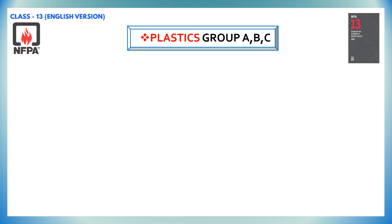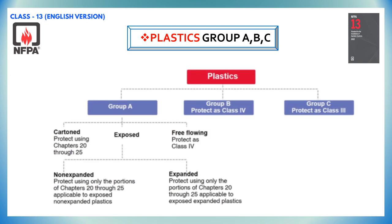Plastics are a little more straightforward since there is a specific list of what each group contains. Classifying plastics gets complicated when the commodity being stored is a combination of different groups of plastics. As you can see on your screen, there are group A plastics, group B plastics, and group C plastics.